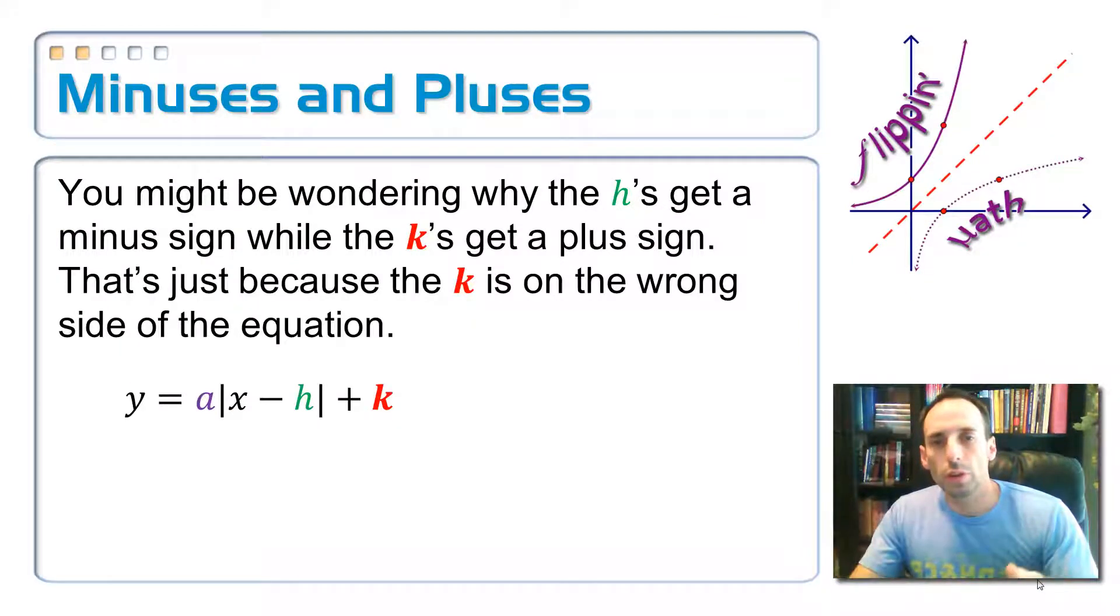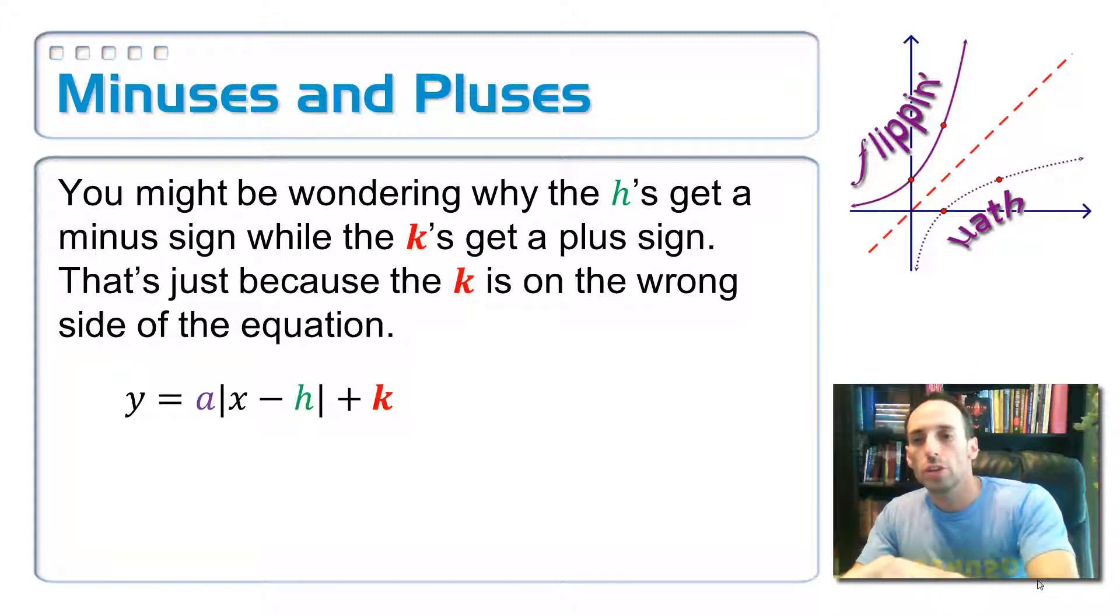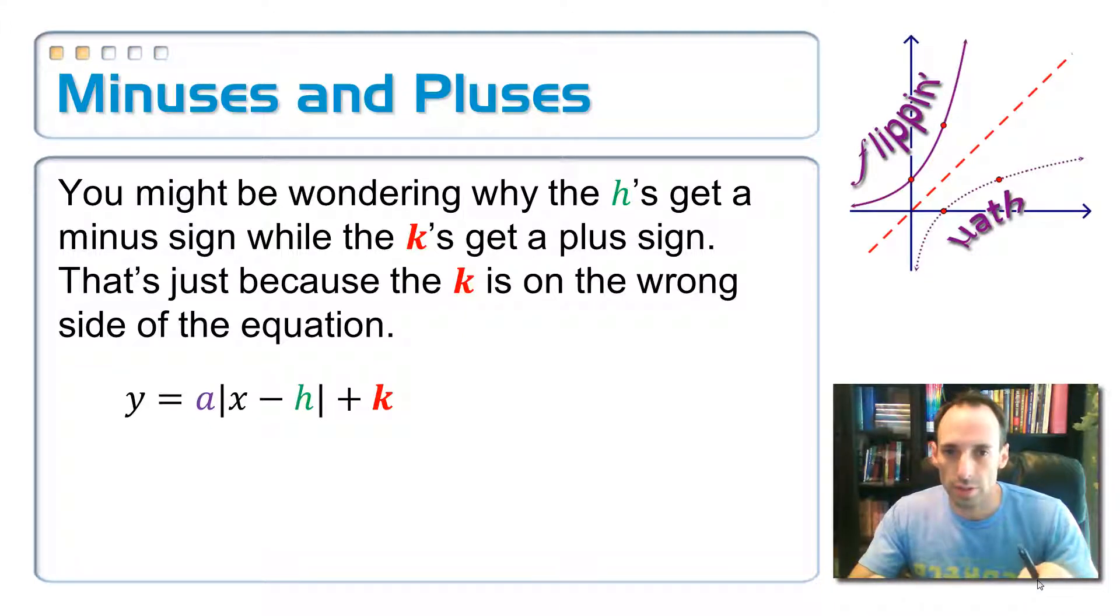So you might be wondering, whenever I had you write down that equation y equals a times the absolute value of x minus h plus k, why did the h get the negative but k got the positive sign?